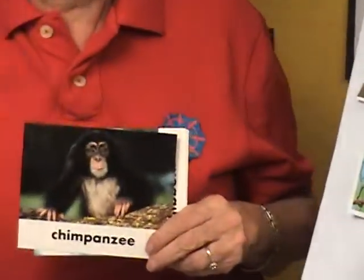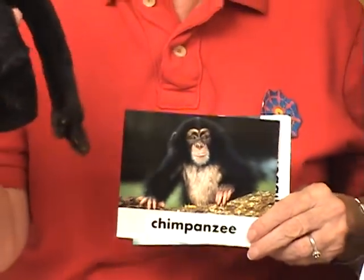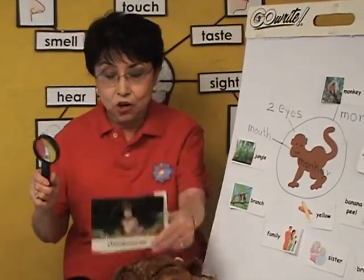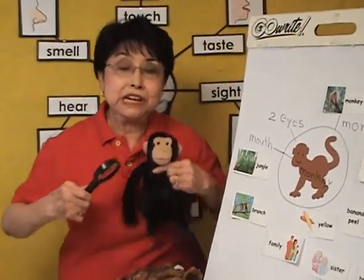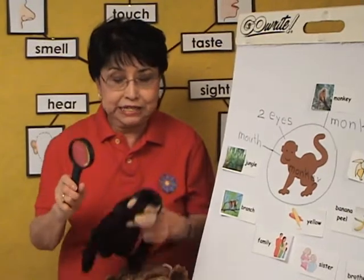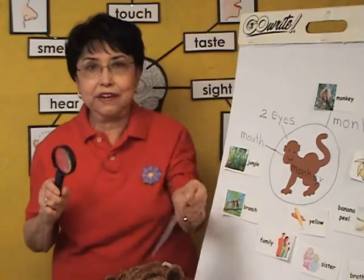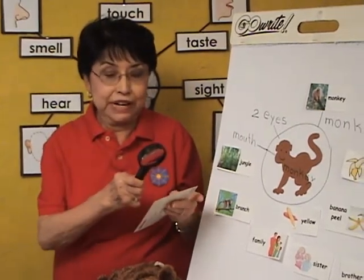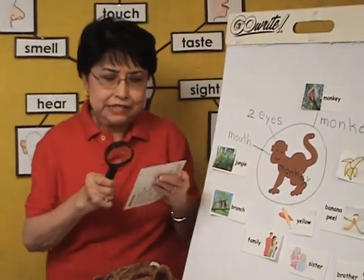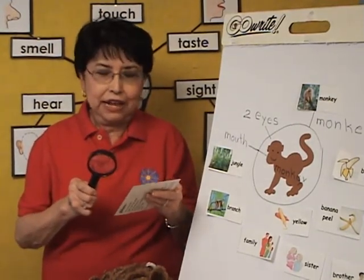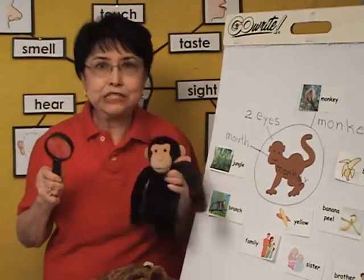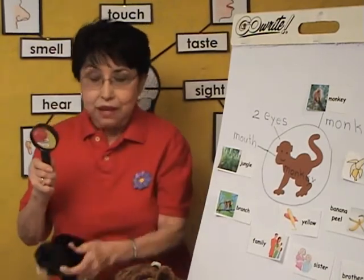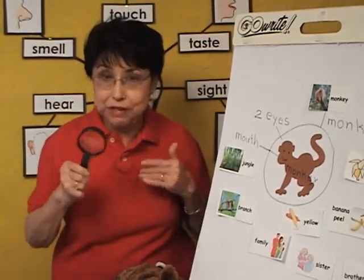Each child will receive a picture card of a monkey to observe, or a stuffed animal to manipulate. Notice that they have a hand lens in one hand and either the picture card or the stuffed animal in the other. I'm going to tell the children: 'I'm going to give you a hand lens — everybody will have one in their hand — and a stuffed animal or picture card.' Children will start looking at their monkey with a magnifying lens. Allow them time to investigate, observe, touch it, smell it, feel it with their fingers, and look at every detail.